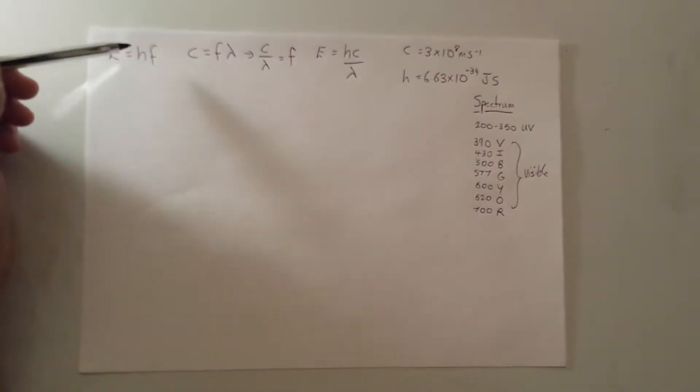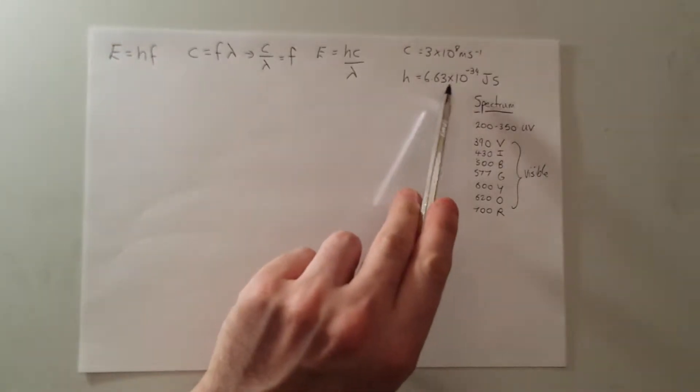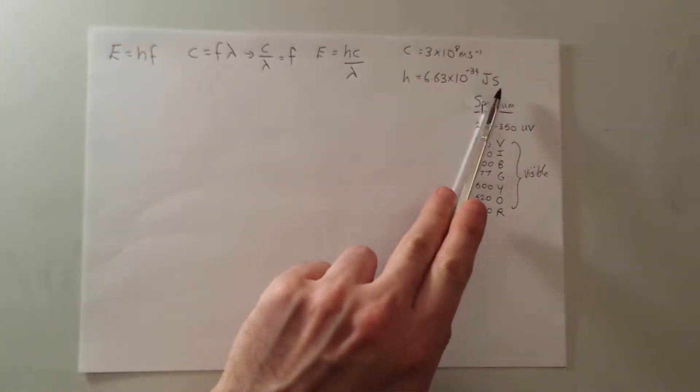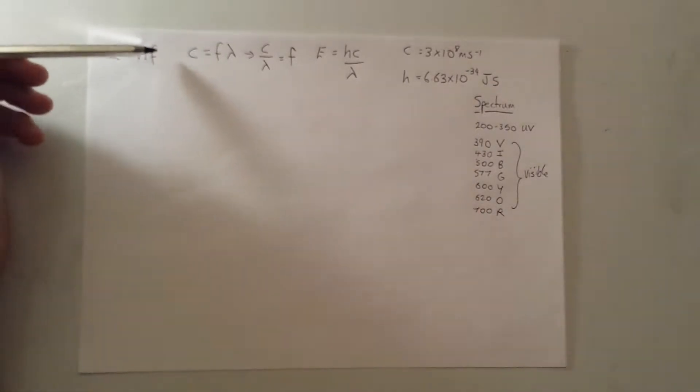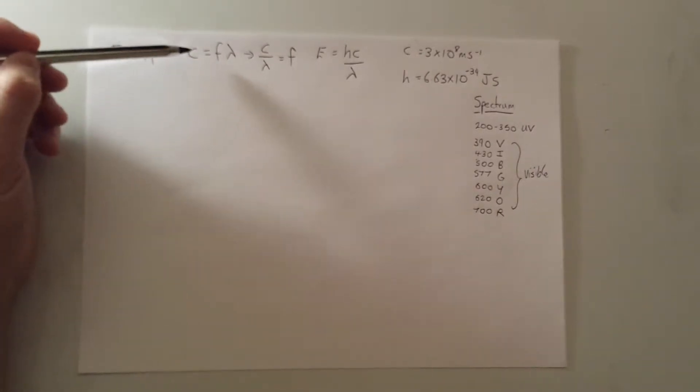Well, when we talk about E equals HF, what we're talking about in effect is the energy that a photon has. And the energy of a photon in our universe is related by this thing called Planck constant, which is this 6.63 times 10 to minus 34 joule seconds, multiplied by the frequency of the radiation. Now, that formula can be also combined with another formula we know, which is the wave equation.